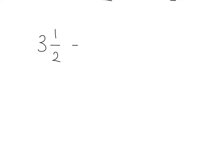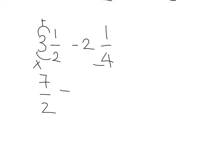Question 2: we've got 3 and a half minus 2 and a quarter. So we'll change both into fractions. 3 times 2 is 6 plus 1 is 7, so 7 over 2. Minus: 4 times 2 is 8 plus 1 is 9, so 9 over 4.